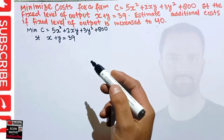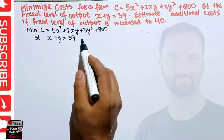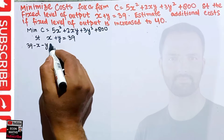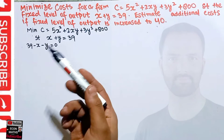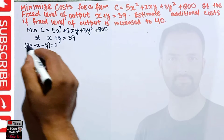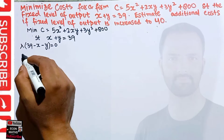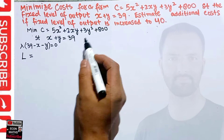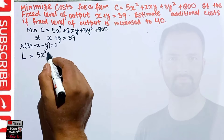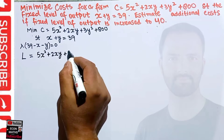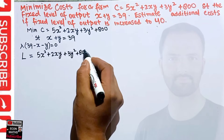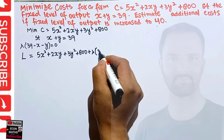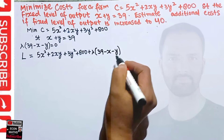How do we form the Lagrange function? First, we set the constraint equal to zero: 39 − x − y = 0. This is the first step. We then multiply it by lambda (λ). The Lagrange function is formed by adding the objective function 5x² + 2xy + 3y² + 800 plus lambda times the constraint: λ(39 − x − y).